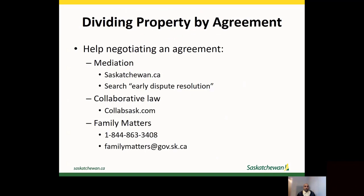If spouses need help negotiating an agreement, they may want to hire a mediator or collaborative lawyers to assist in working towards an agreement. For further information, see the options for resolving disputes video in this series. Another option is the Family Matters program, which offers assistance to resolve urgent and outstanding issues. If both spouses agree to participate, the program will arrange a free three-hour problem-solving session. You can call 1-844-863-3408 or email familymatters@gov.sk.ca for more information.